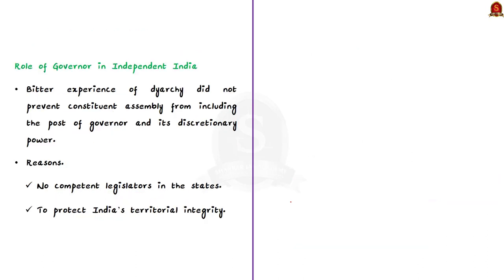Our national leaders experienced the bitter experience of diarchy. The leaders argued about how a governor could have precedence over the elected representatives of the people. It was due to such bitter experience that there were fierce battles surrounding the office of governor while the constitution was being framed. Even after such lengthy debates, the Constituent Assembly moved forward with the post of governor and even offered the governor some discretionary powers.